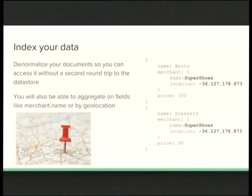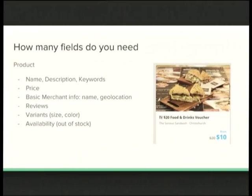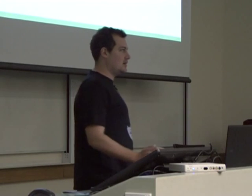An important thing: Elasticsearch and JSON document stores in general are not SQL, so you need to think completely differently. You need to duplicate your data, which is really weird coming from a SQL world. For example, if we have boots and sneakers documents, we put a merchant sub-document inside each one, repeating the name and location. This is really important — each document needs to contain all the info you're going to search on or group by. At the end, you don't have that many fields to display to your end user since you're using Elasticsearch for end users, not as your main data store.